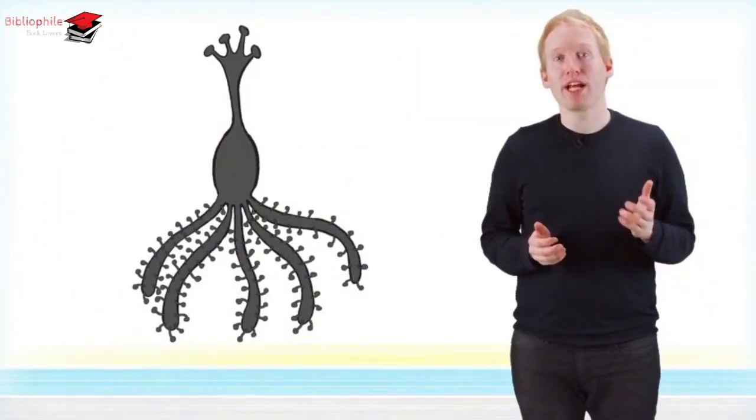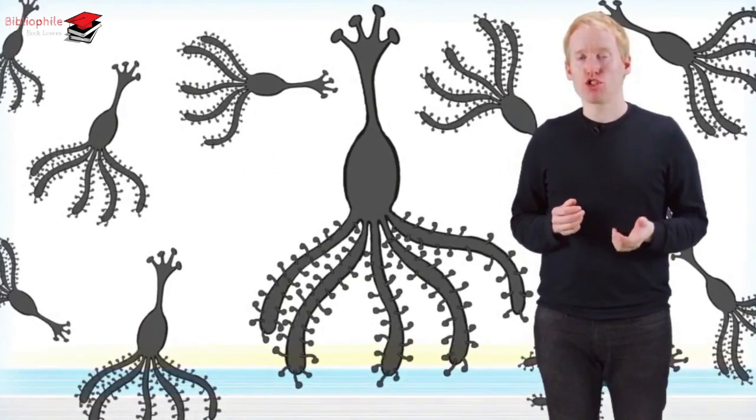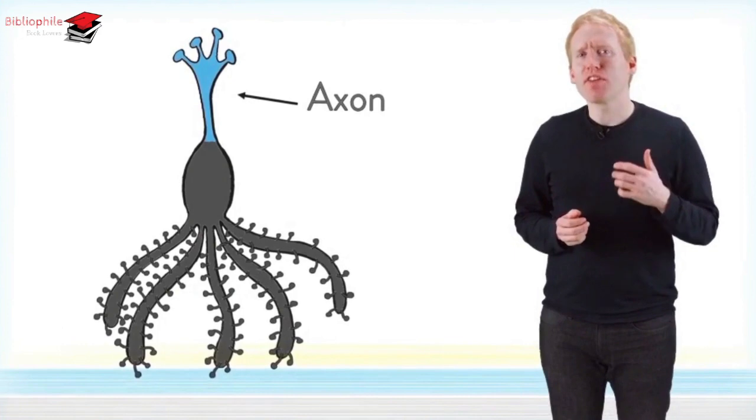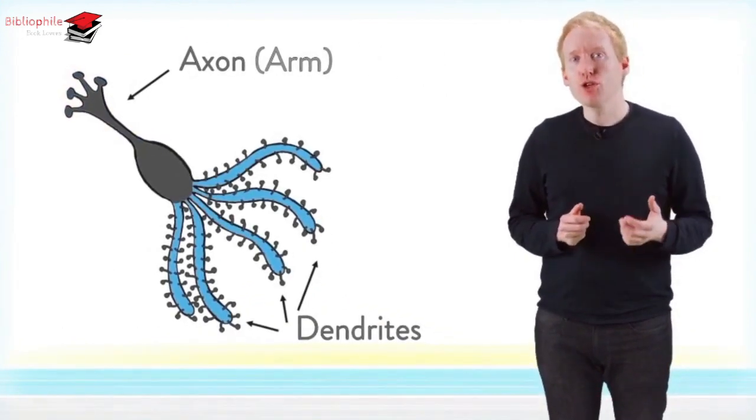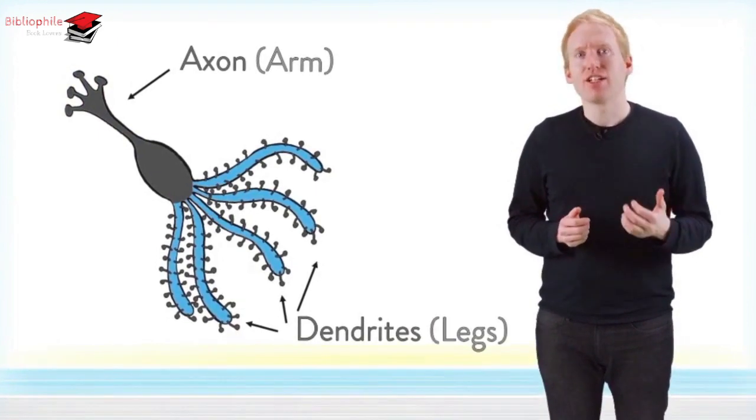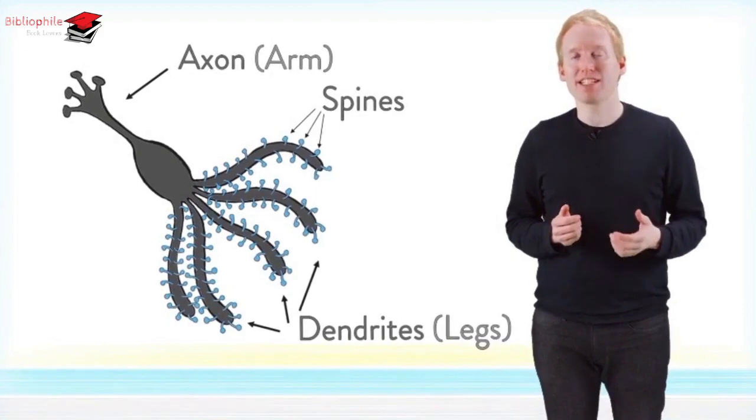Neurons are your brain's building blocks. You have around 86 billion of them. Neurons have an axon. You can think of that as the neuron's arm. Neurons also have dendrites, which you can think of as legs. There's a lot of little spines on these legs. You can think of those spines as toes.